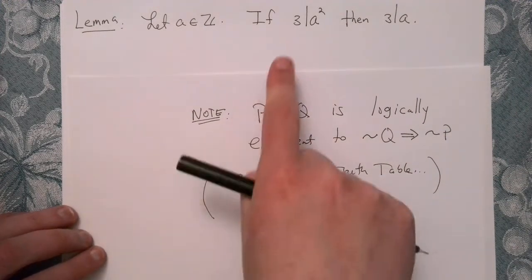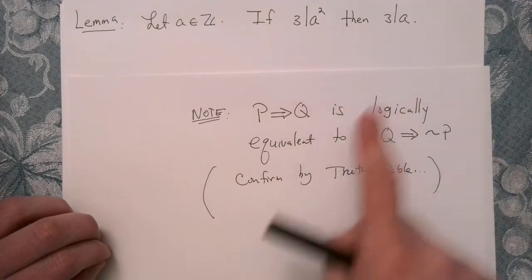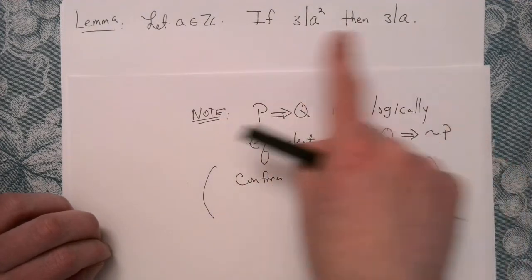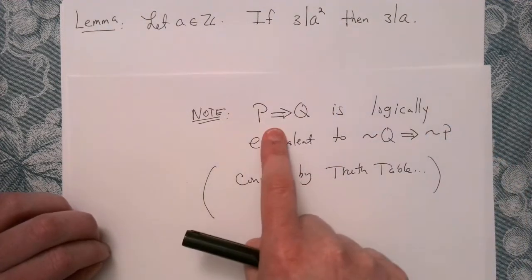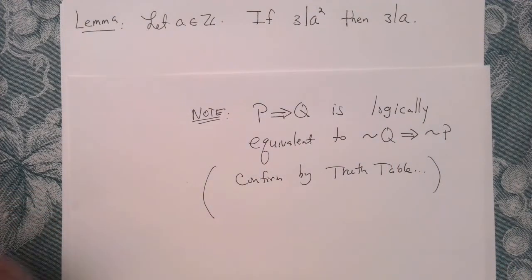Okay, so in this case, for our problem here, this is playing the part of P and this is playing the part of Q. These are two statements, right? So if P is true, then Q is true. We want to prove that. But proving that is the same thing as proving the contrapositive, which in some cases can prove to be a lot easier.